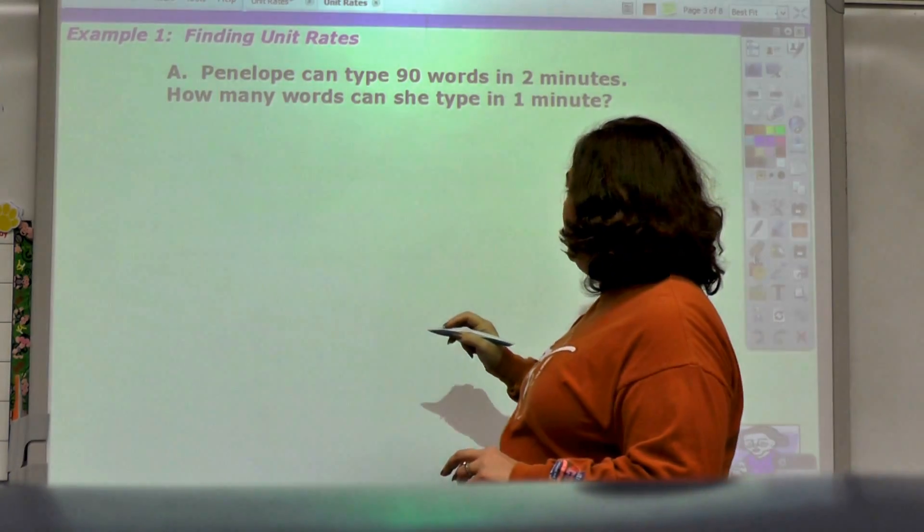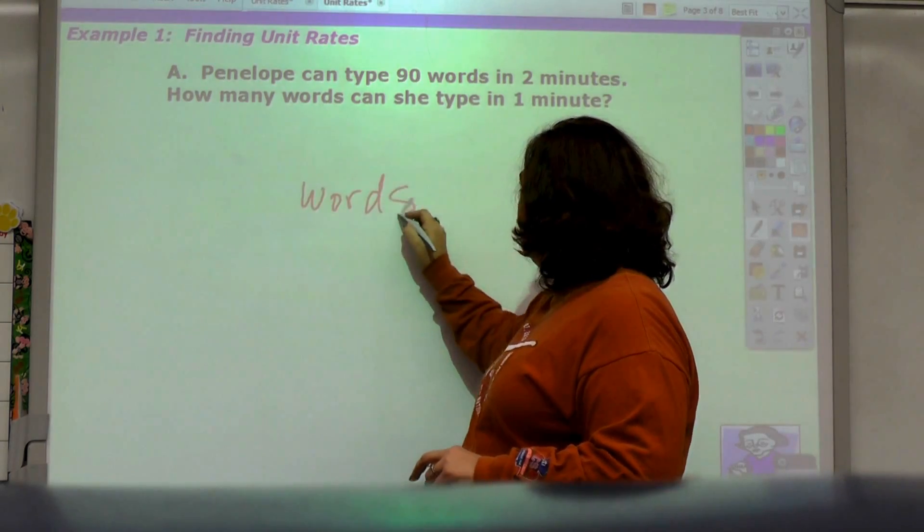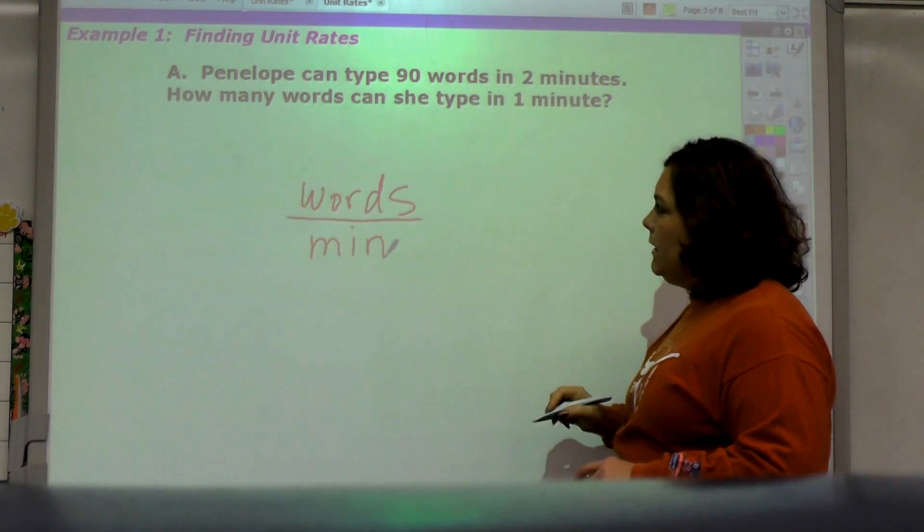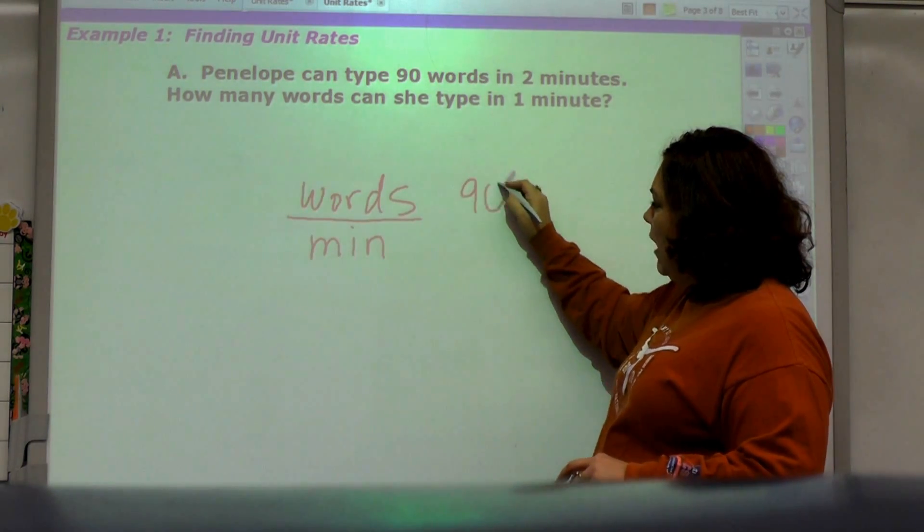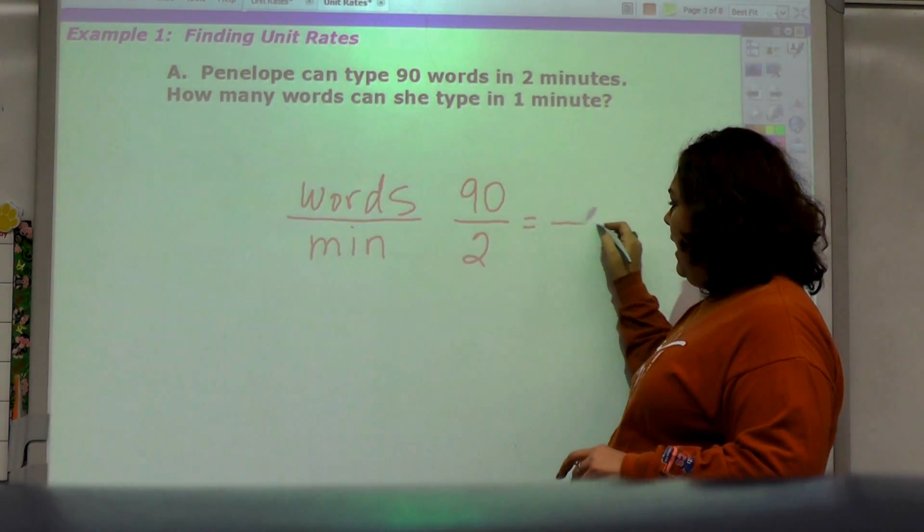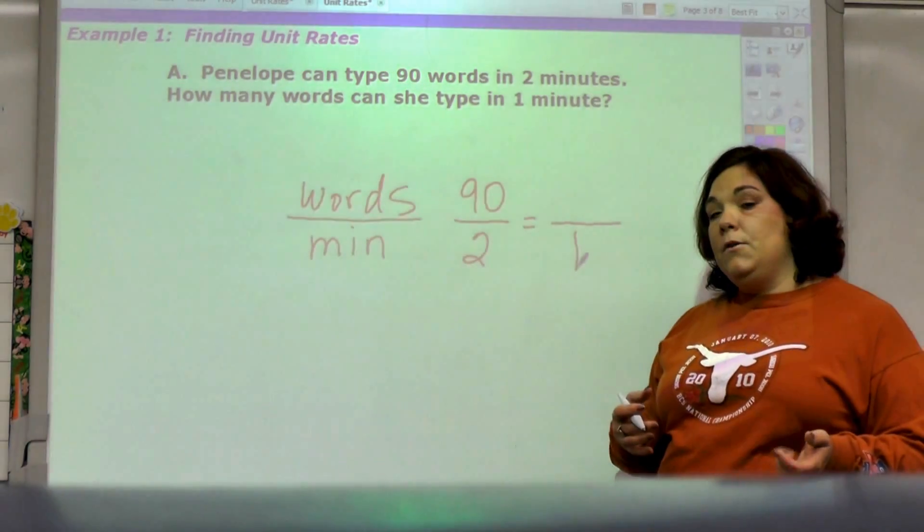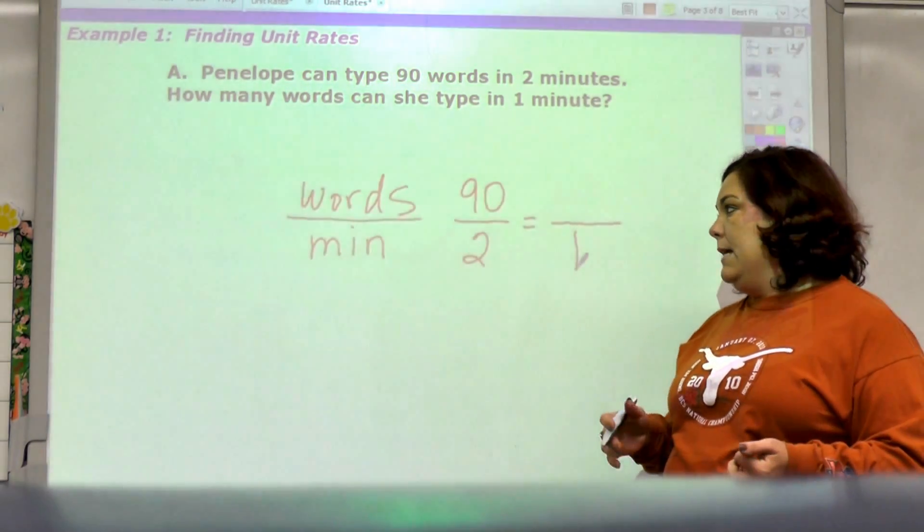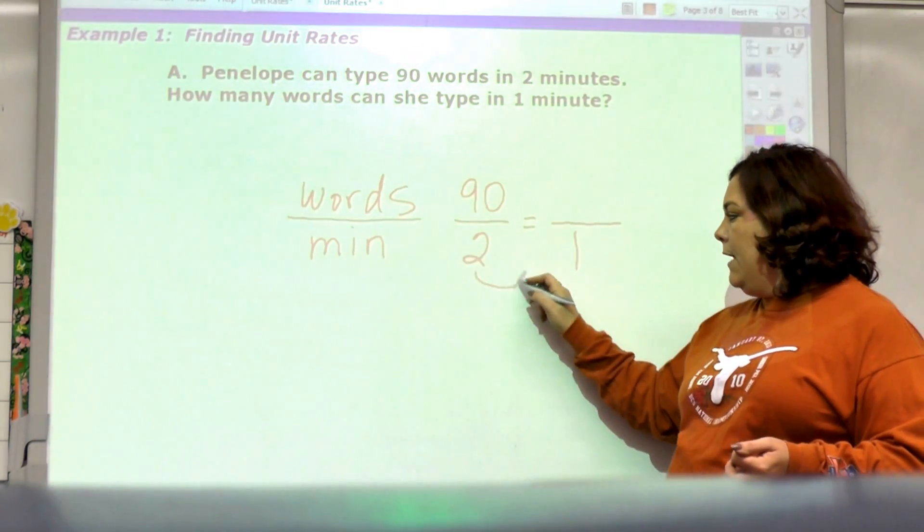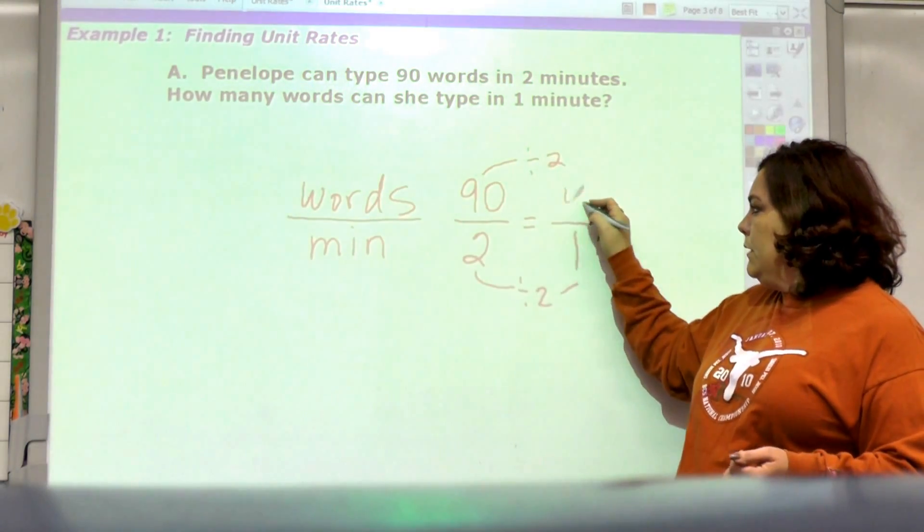Let's do an example of finding a unit rate. Penelope can type 90 words in two minutes. How many words can she type in one minute? Per minute, one is per minute. I'm going to label it and say I'm comparing words to minutes. I've got 90 words in two minutes and I want to find out how many in one minute.